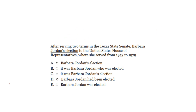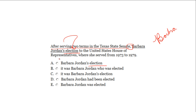Problem 2: 'After serving two terms in the Texas State Senate, Barbara Jordan's election to the United States House of Representatives, where she served from 1973 to 1979.' The opening phrase 'after serving two terms in the Texas State Senate' modifies the first noun after the comma — 'election.' This sentence is saying that election served two terms; it should say Barbara Jordan served two terms. We need to use Barbara after the comma. We can eliminate A because 'election' is modified, B because 'it' is ambiguous and modified, and C for the same problem.